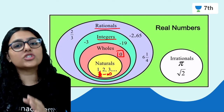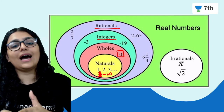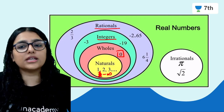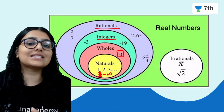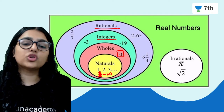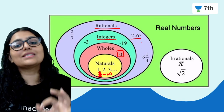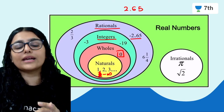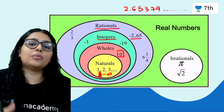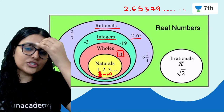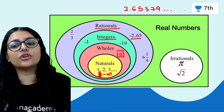The next type of numbers are rational numbers, which can be written in the form of P upon Q. They also have their negative counterparts — so basically positive and negative fractions. When we convert them to decimals, they are terminating and repeating. Terminating means an answer like 2.65 comes and it does not keep carrying forward. So these are our rational numbers.